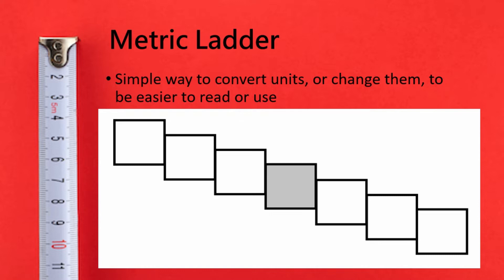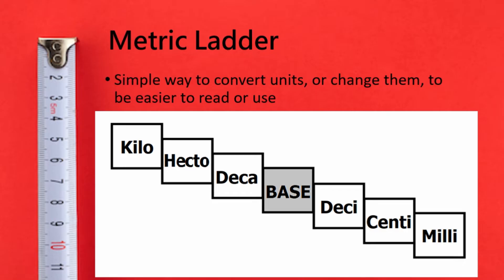Now we're going to take a look at the metric ladder. This is a tool we're going to use to convert easily from one unit to another. So if we have two meters, we'll be able to convert to centimeters or kilometers. We'll fill in our ladder from largest prefix to smallest — kilo being the largest, milli being the smallest — with our base units (meters, liters, grams) in the middle.